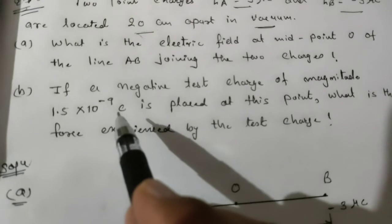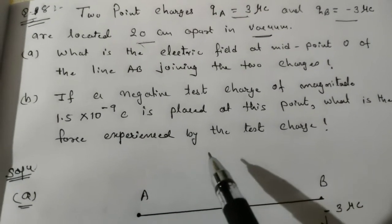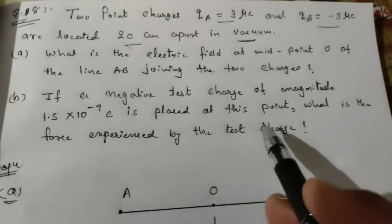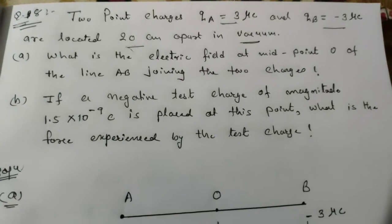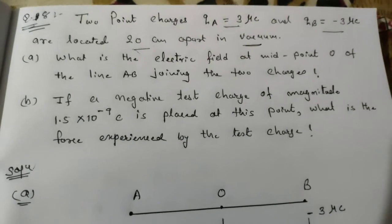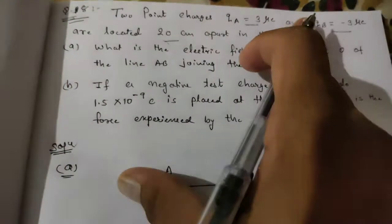Second question: if a negative test charge of magnitude 1.5 × 10⁻⁹ coulomb is placed at this point, what is the force experienced by the test charge?